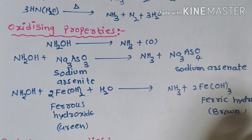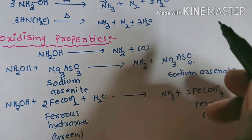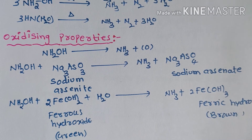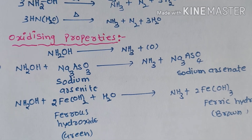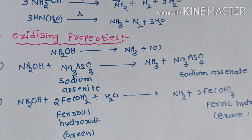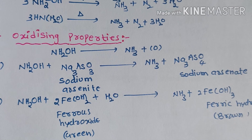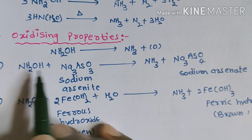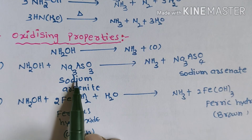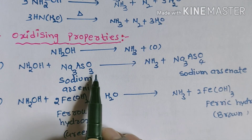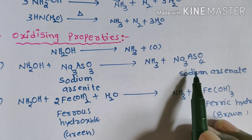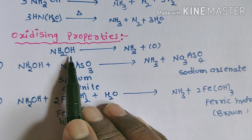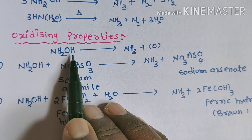Next are the oxidizing properties. Any substance that has oxygen atoms in it behaves as an oxidizing agent, and since hydroxylamine contains oxygen atoms it also behaves as an oxidizing agent. Hydroxylamine reacts with sodium arsenite (Na₃AsO₃) and forms sodium arsenate. This is the base equation for the oxidizing properties of hydroxylamine.